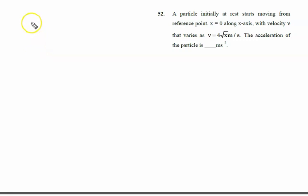A particle initially at rest, with initial velocity u = 0, starts moving from reference point x = 0 along the x-axis. Its velocity v varies as v = 4√x meters per second. The velocity is a function of x; as x changes, velocity changes. Find the acceleration of the particle in meters per second squared.